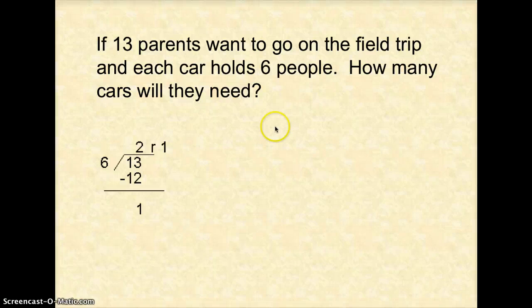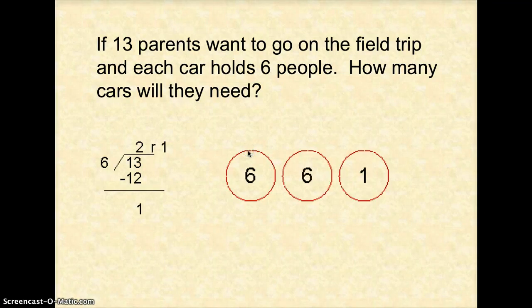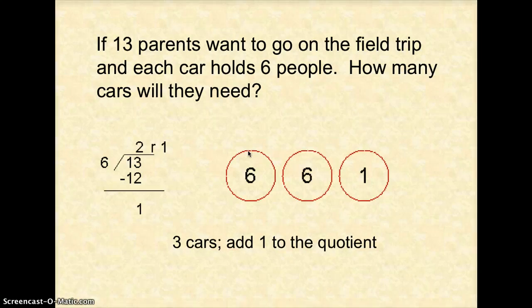But remember everyone wanted to go on that trip. So I've got two full cars with one left over. So that one left over means I need to add one more to my quotient because everyone gets to go. This guy over here still wants to go. We can't leave him at home just because there's not enough cars. So we would end up needing 3 cars for everyone to go.